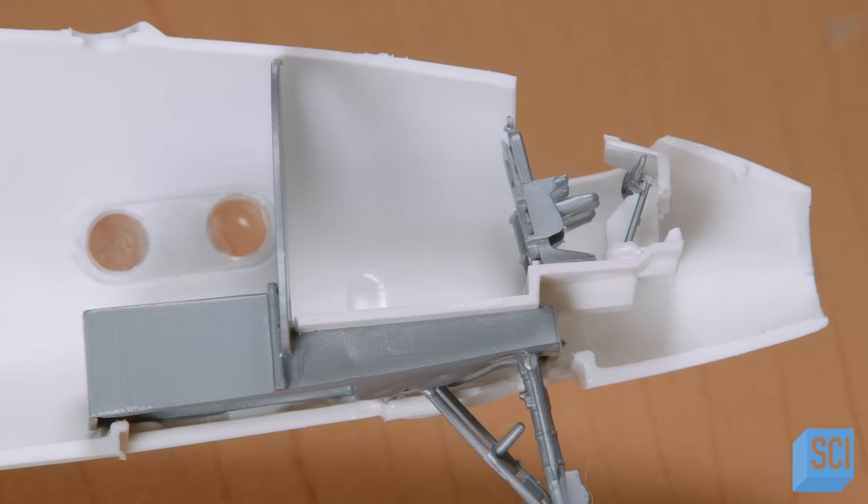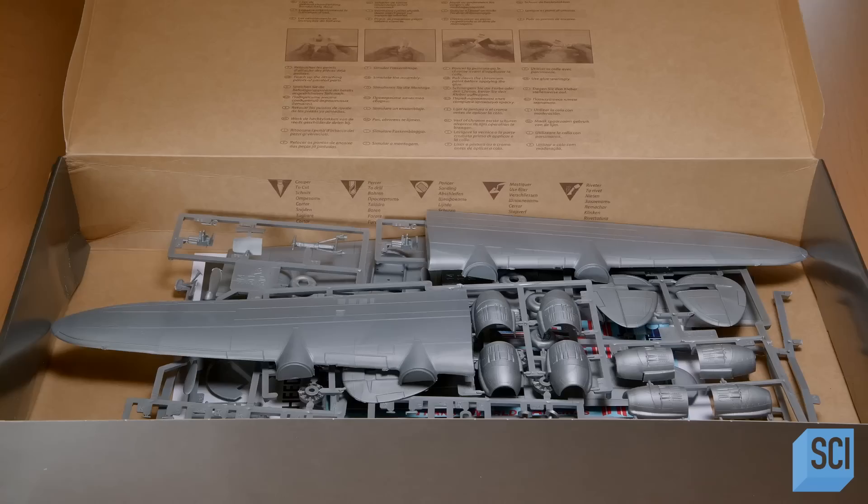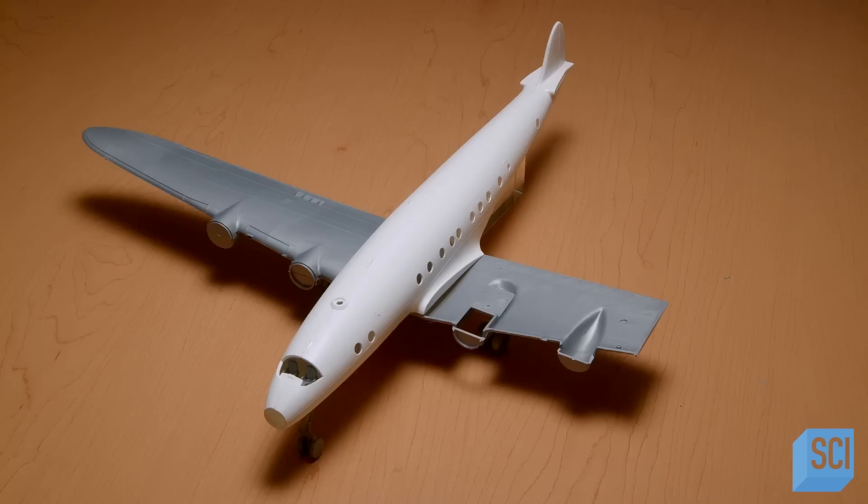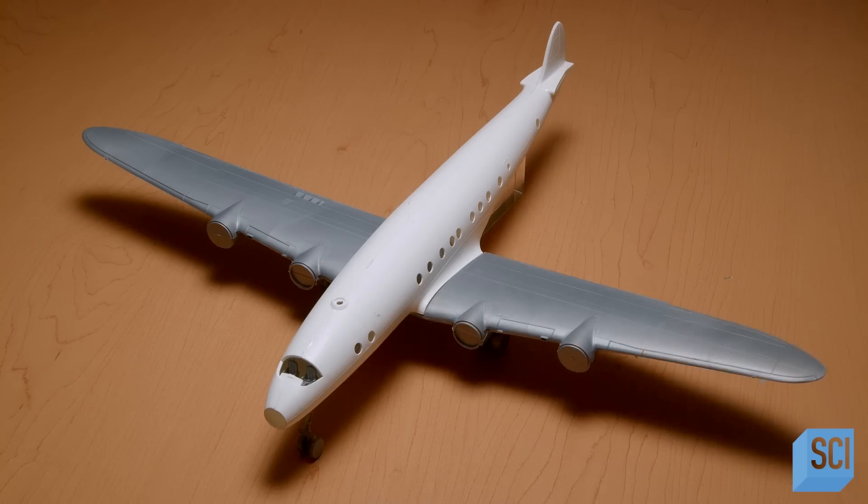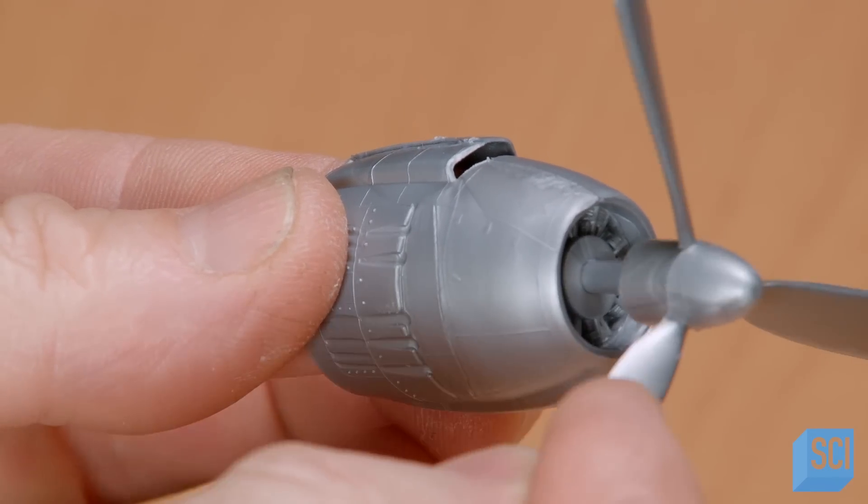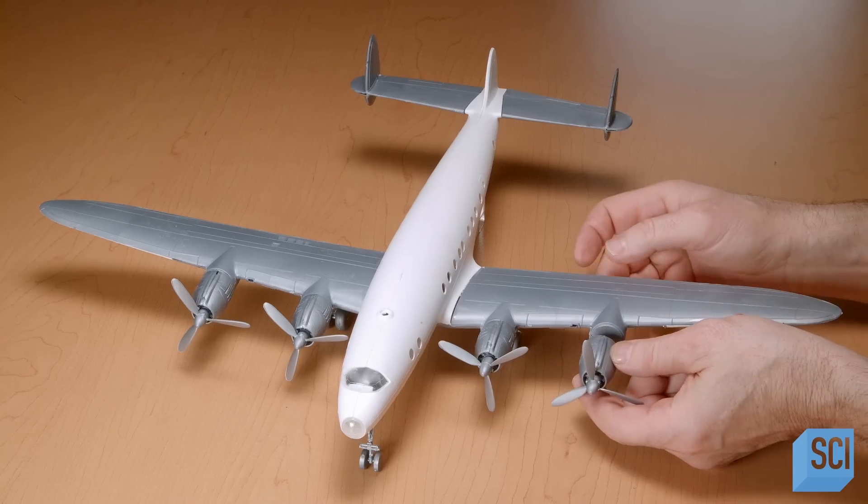Building the model will take 10 to 12 hours. The factory does a test build on each model to confirm that it comes together as planned. This is the iconic Constellation aircraft, a World War II military transport plane that was later converted to a commercial airliner. Assembling a plastic model kit can be a great learning experience for the builder.